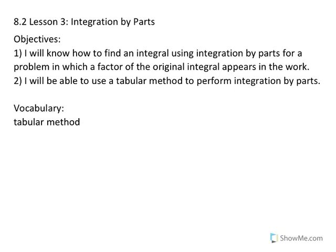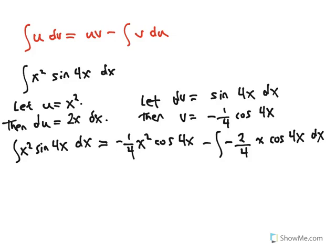Our second objective for today's lesson is to use a tabular method to perform integration by parts. Here we have the integration by parts formula, and here is a problem to which we begin applying the formula using the guidelines we've learned. We let u be equal to x squared, and we let dv be the remaining part of the integrand.